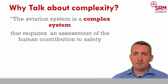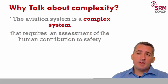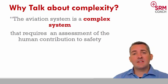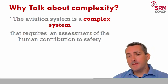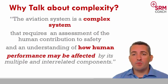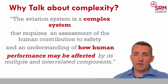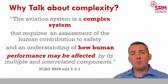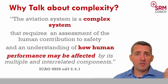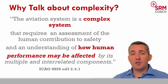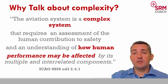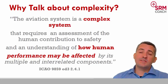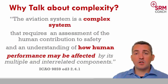Why do we need to talk about complexity? It says in the ICAO safety management manual that aviation is a complex system that requires the assessment of human contribution to safety and an understanding of how human performance might be affected by its multiple and interrelated components. So the definition there is already a complex system — and not just a complex system, but a complex socio-technical system, because there are people involved. They interact with technology and other people, and technology interacts with other technology, which generates a lot of interactions that are unpredictable.